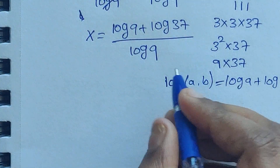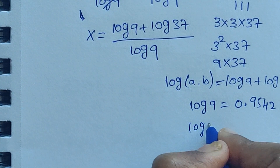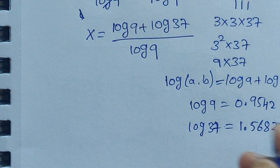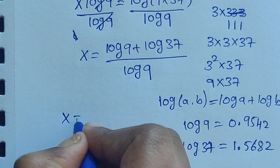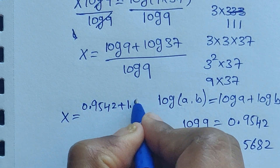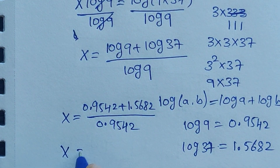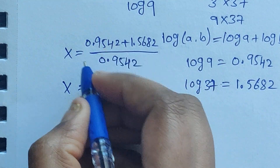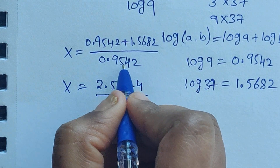We know the values of log 9 and log 37: log 9 equals 0.9542 and log 37 equals 1.5682. Now we substitute these values into the equation. So x equals 0.9542 plus 1.5682, divided by 0.9542.